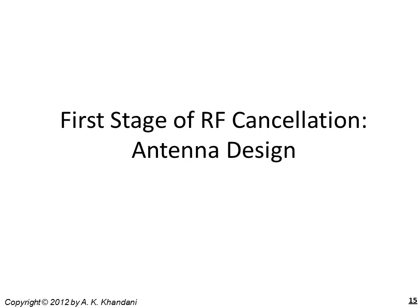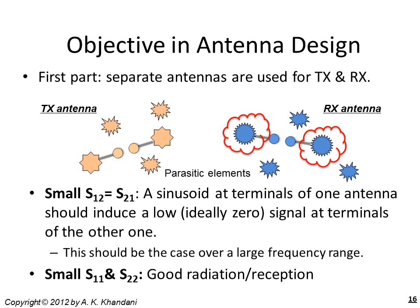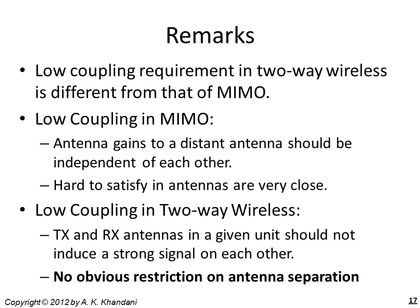With this introduction, let us start with the first part, which involves antenna design. An antenna is composed of two arms connected to terminal nodes and surrounded by parasitic elements. We rely on using separate antennas to transmit and to receive. We would like to have small coupling between transmit and receive antennas, meaning a sinusoidal signal at the terminals of the transmit antenna should result in a small—ideally zero—signal at the terminals of the receive antenna, over a large frequency range, with good antenna efficiency indicated by small S11 and S22. The low coupling requirement in two-way wireless is very different from the requirement in MIMO.